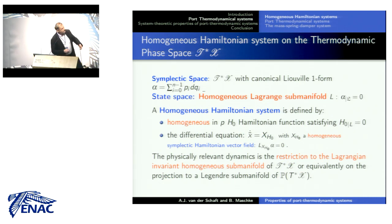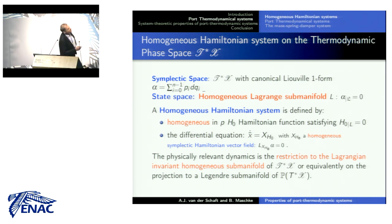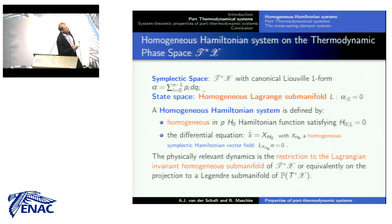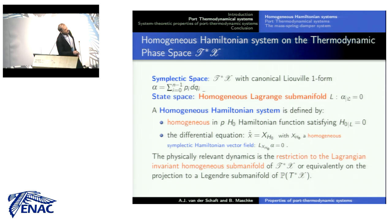We were very enthusiastic about this idea. This symplectic space is not the state space of the system — it is an embedding space, because I want to cover both formulations. The state space is where the Gibbs equation is satisfied, and actually it is a Lagrange sub-manifold, with the additional requirement that it be a homogeneous Lagrange sub-manifold. Then you can define a homogeneous Hamiltonian system — a standard symplectic Hamiltonian system where the Hamiltonians are homogeneous functions of the momenta P.